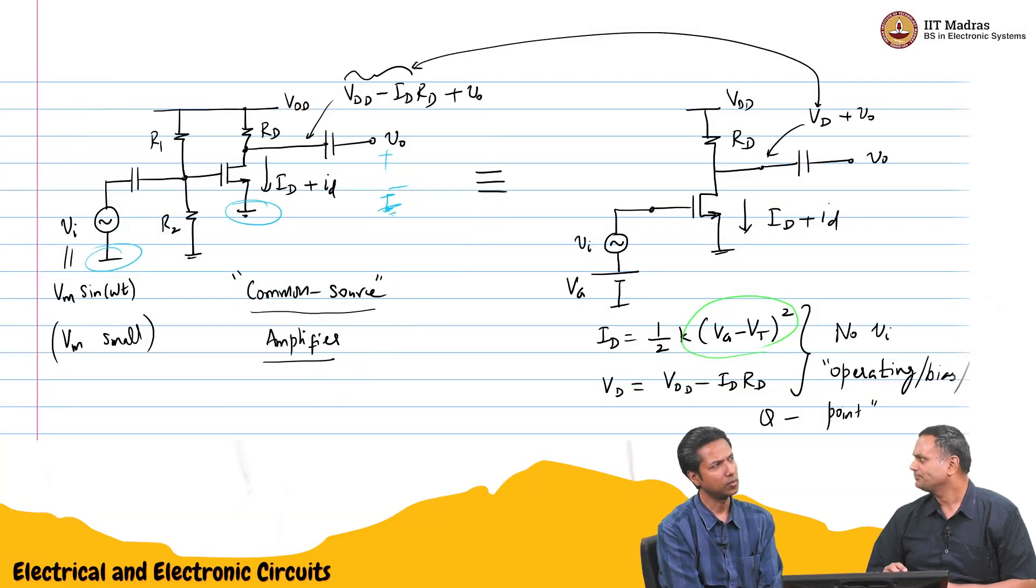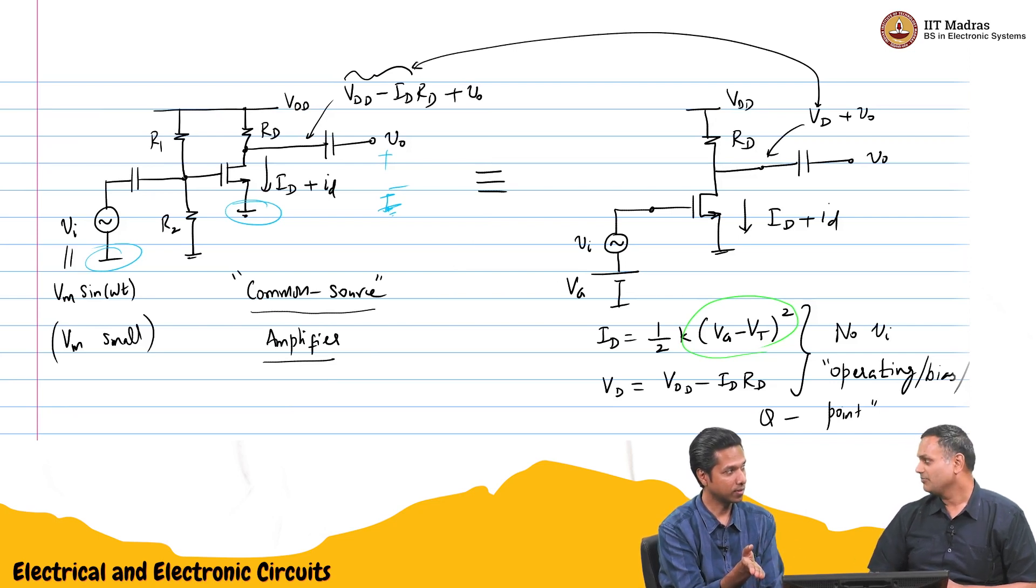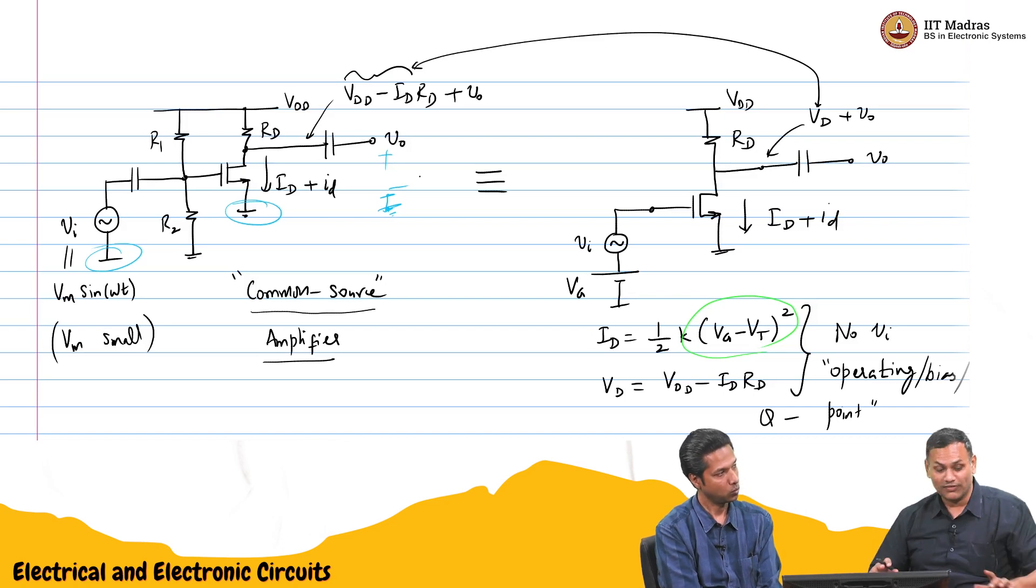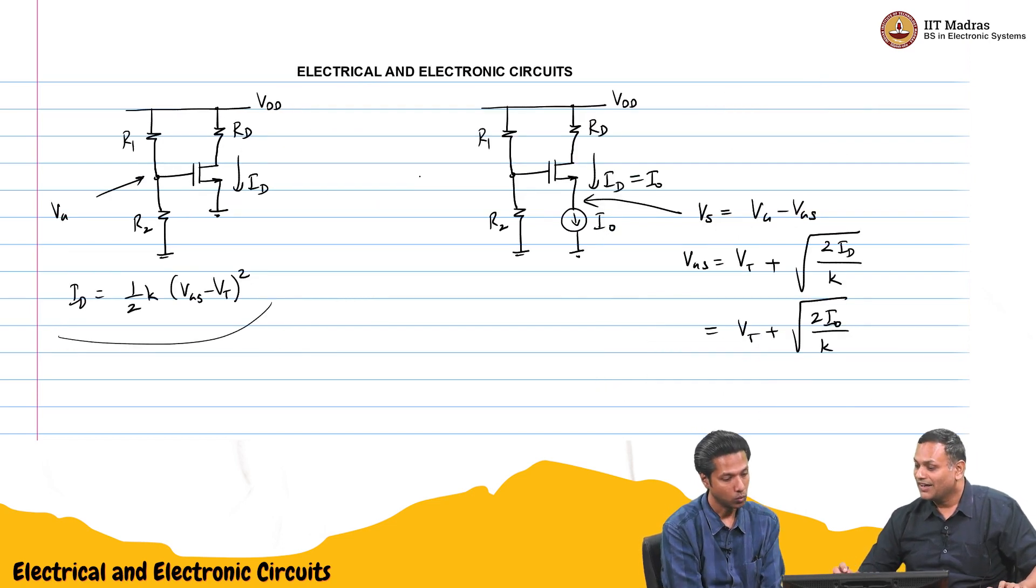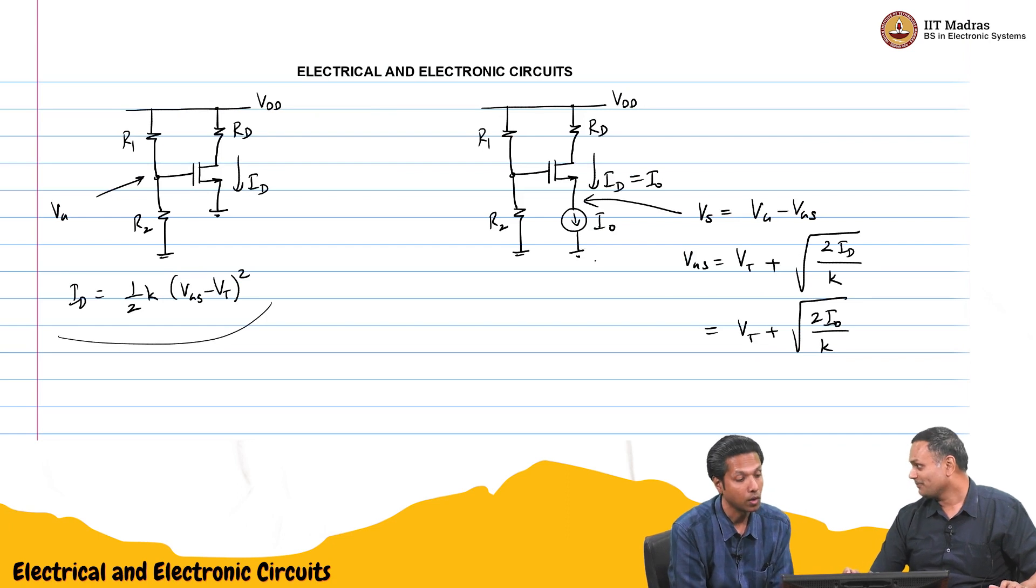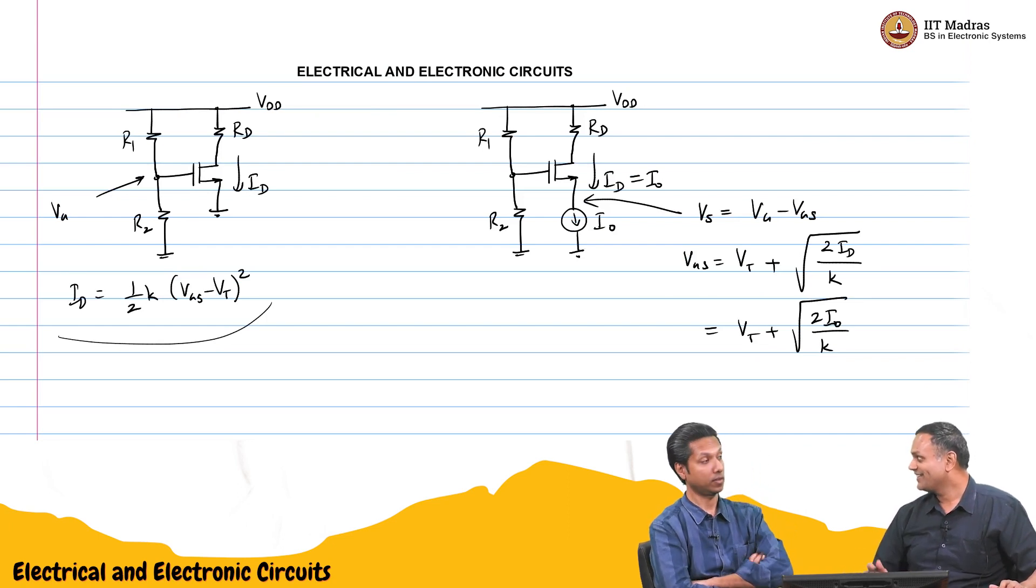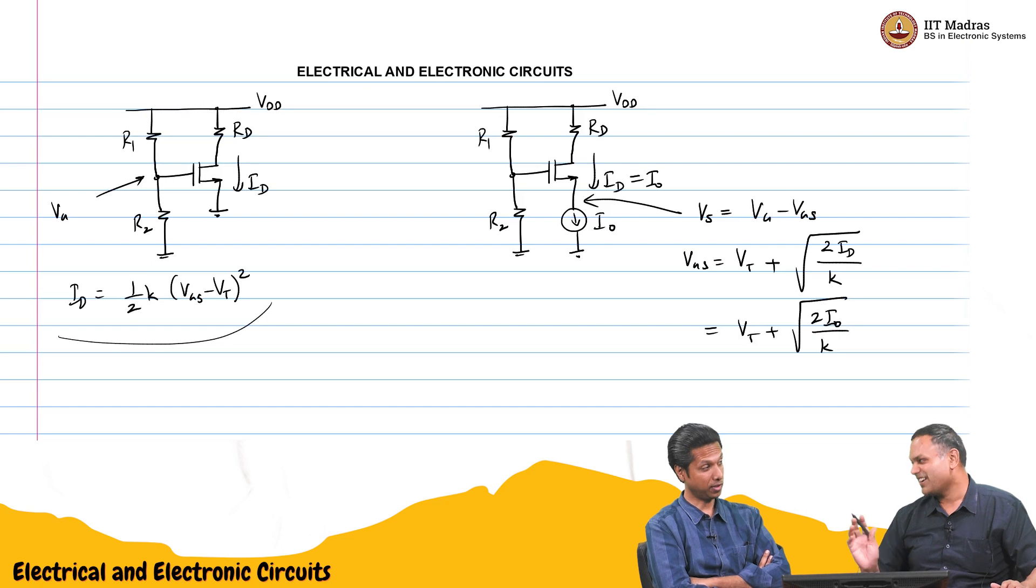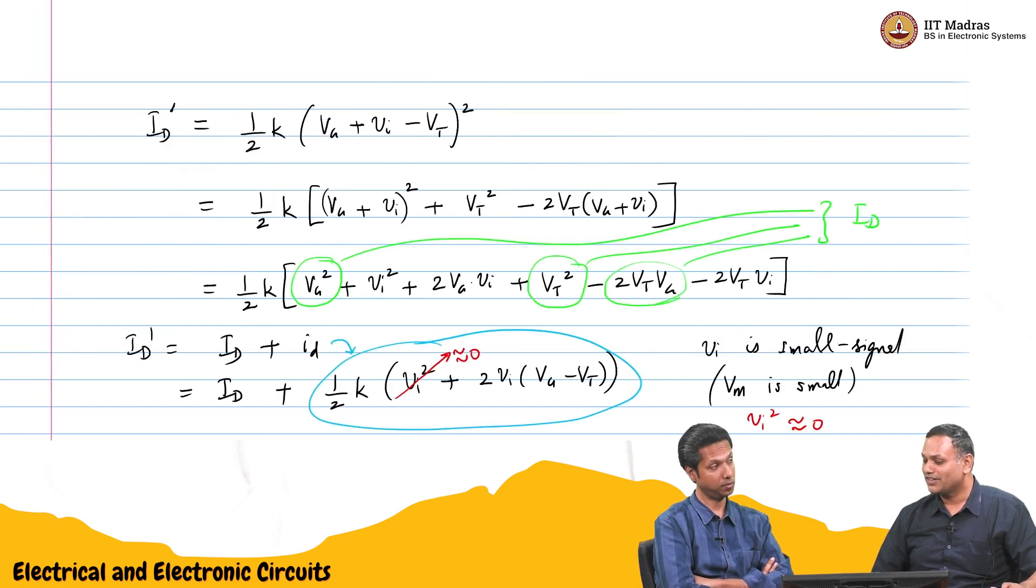In BJT, we discussed common base and common collector configurations. You have similar things here. But before we go there, one of the things we discussed was how to build this current source. In the BJT, we biased it in current mirrors. Let's try to see if we can build current mirrors using MOSFETs.